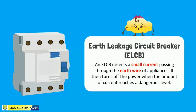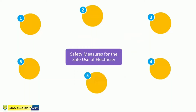Lastly, we have the earth leakage circuit breaker (ELCB). An ELCB is a safety device used in electrical appliances to prevent electric shocks. It detects a small current passing through the earth wire and turns off the power when the amount of current reaches a dangerous level.